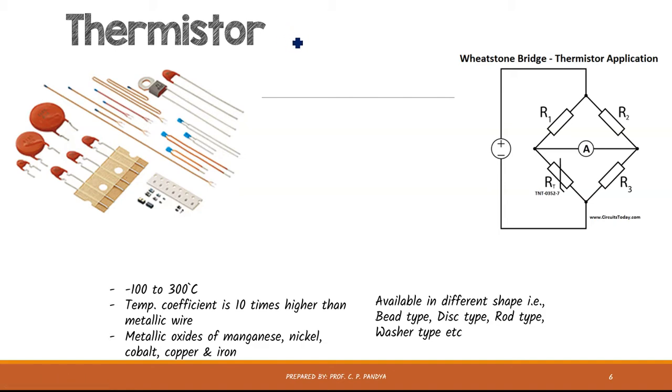Now this word thermistor is actually a combined word for the term thermal resistor. So this thermistor word is made up of these two different words: first one is thermal and second one is resistor. So it is a kind of resistor, same as RTD, but here is one change that the material which are used to manufacture the thermistor are basically semiconductor.